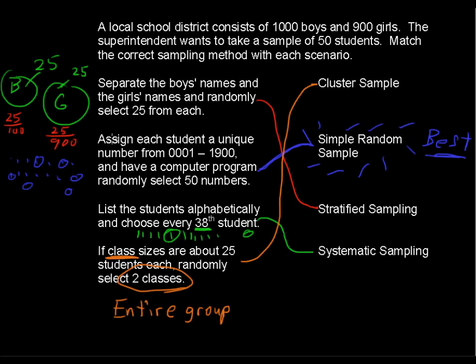Whereas with stratified sampling, you're choosing just some people out of each group. So you start the same, these start the same, the cluster and stratified start the same, but they end differently. So there's a few examples of some sampling methods.